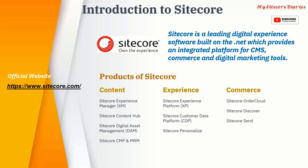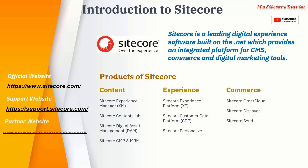Let's look at a few important Sitecore URLs. The official website is www.sitecore.com — for more information you can go there. For support, you go to support.sitecore.com — in any project, if you need support, you raise a ticket there. There is also a partner website — companies can have a Bronze, Silver, or Platinum partnership with Sitecore depending on their criteria, and partners get support for projects and employee certification coupons for discounts. Sitecore was founded in Denmark in 2001.